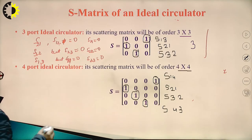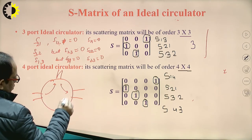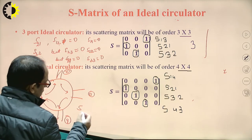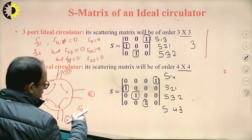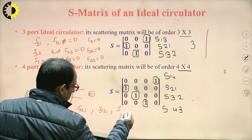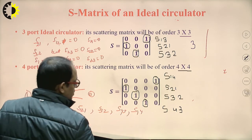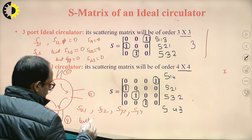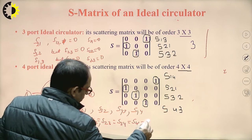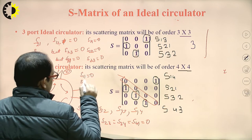For a four-port ideal circulator: input at port 1 gives output at port 2 (S21 = 1); input at port 2 gives output at port 3 (S32 = 1); input at port 3 gives output at port 4 (S43 = 1); input at port 4 gives output at port 1 (S14 = 1). The reverse direction values S12, S23, S34, S41 are all zero, and all ports are perfectly matched: S11 = S22 = S33 = S44 = 0.